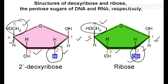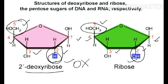The difference between ribose and deoxyribose is at the position of the second carbon. In ribose sugar, there is a hydroxyl group — oxygen is present with the second carbon. But in deoxyribose sugar, only one hydrogen atom is attached to the second carbon; the oxygen is removed. Since oxygen is removed, it is called deoxyribose.